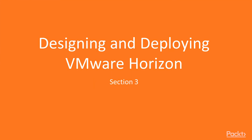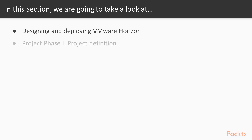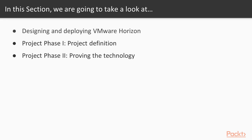Hello and welcome to the third section of this Learning VMware Horizon course, Designing and Deploying VMware Horizon 7. In this section, we're going to concentrate on the design aspects of your Horizon 7 environment. We'll start with an overview of how you should approach the project and the steps and processes you need to work through from building out your initial business case, to proving the technology and then finally deploying your production environment.